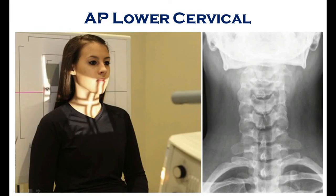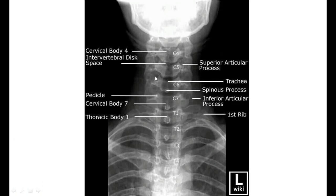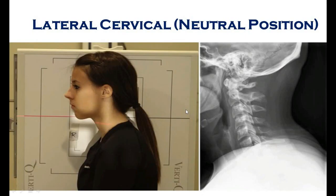The next view is the AP view to show the lower cervical vertebrae. In this view, the X-ray film is behind and the X-ray beam is projected from the anterior aspect. Cervical vertebrae C4 through C7 and T1, T2, T3 are visible, along with the tracheal shadow (appearing black), spinous processes, pedicles, and transverse processes.